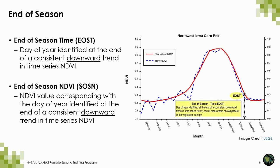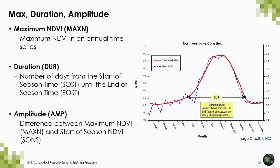Conversely, the end of season, or EOS, is the end of measurable photosynthetic activity, and the EOST is the date of the year that that's observed. For remote sensing, this is when the NDVI value has a consistent downward trend. The maximum or peak NDVI can also be identified. The duration of the growing season can be used to identify shifts in the start and end of the season under climate change, and is identified as the number of days from the start of season to the end of season. The amplitude is defined as the difference between the maximum NDVI and the start of the season NDVI. This is important to identify what increase of photosynthetic activity is relative to the baseline.